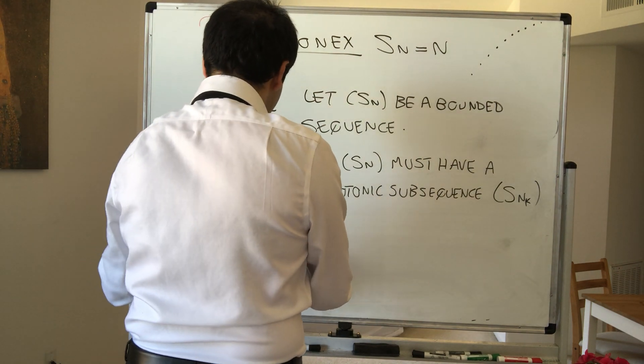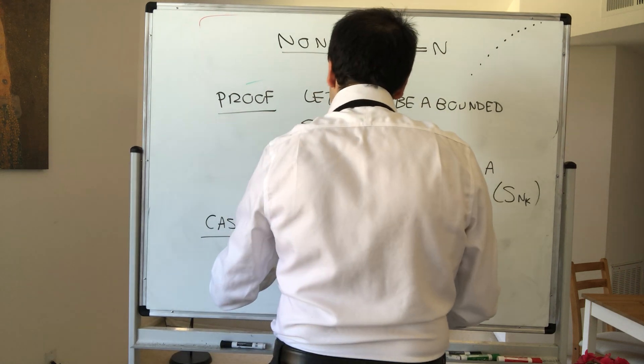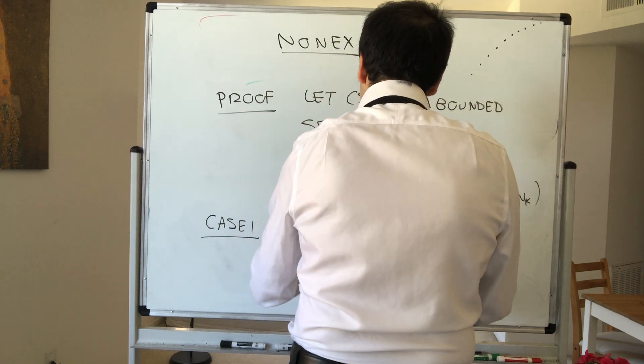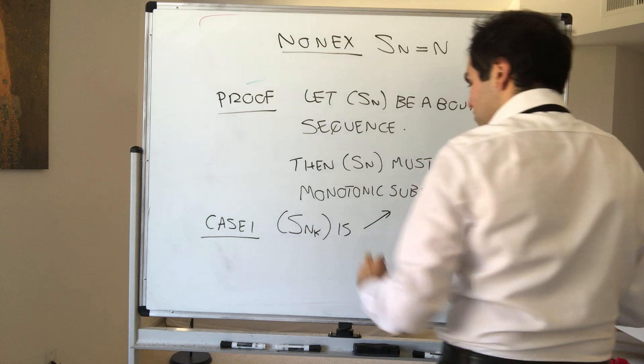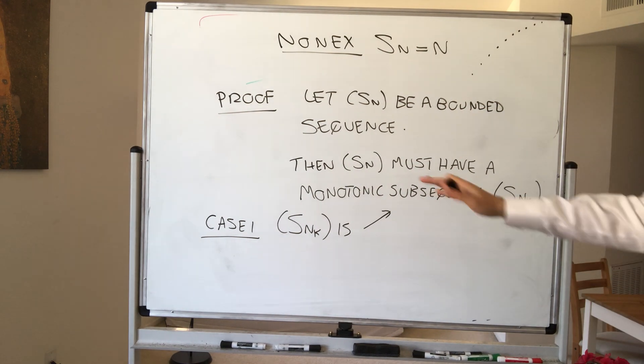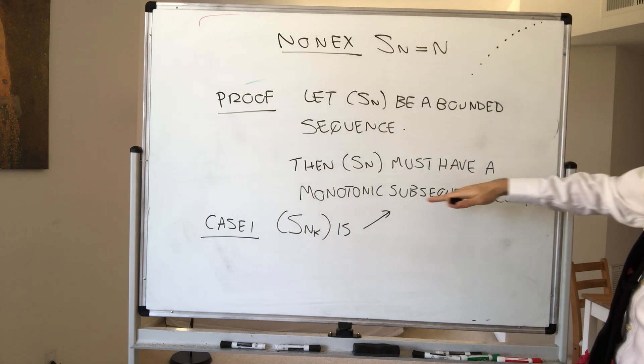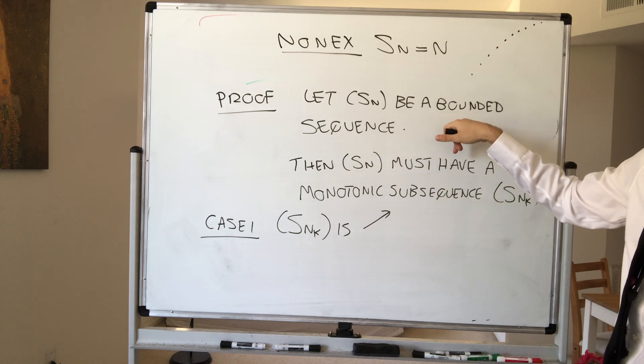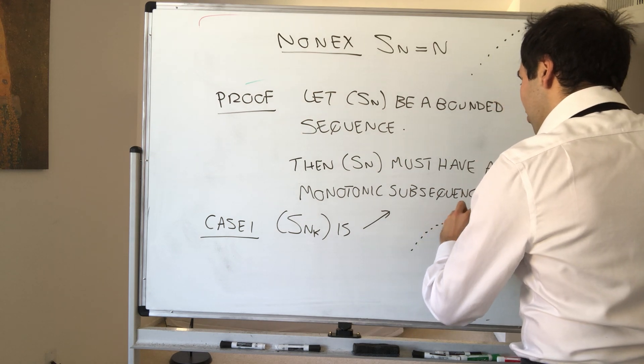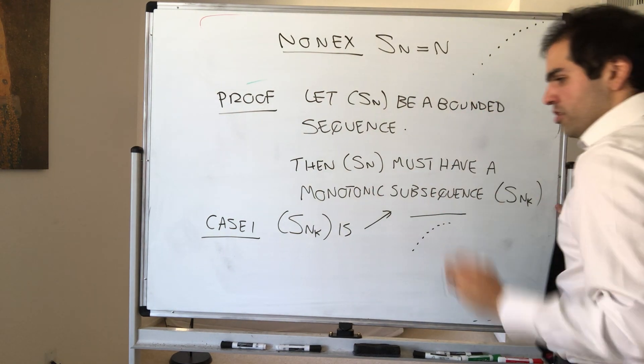So, case one: let's say Snk is non-decreasing, okay? Then, what do we have? Snk is non-decreasing and bounded above, because Sn is bounded, and therefore, Snk must converge.